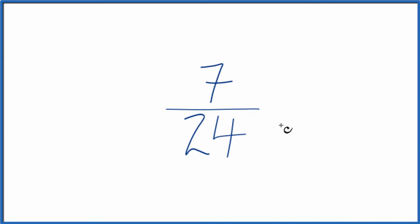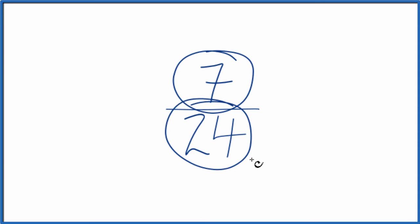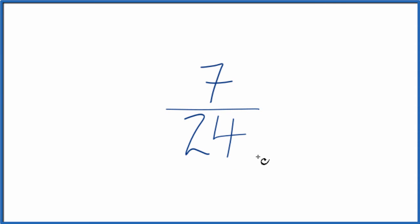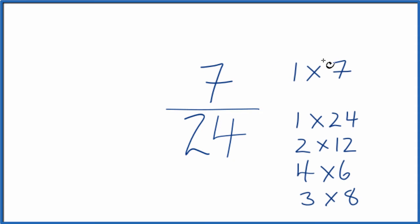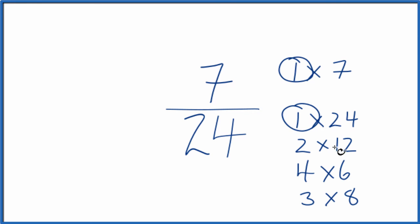So what we need to do is find a common factor — something that goes into 7 and 24 evenly. Let's list the factors of 7 and 24. The only common factor, or the greatest common factor, is 1. So we'll divide 7 by 1 and 24 by 1 to simplify 7/24.